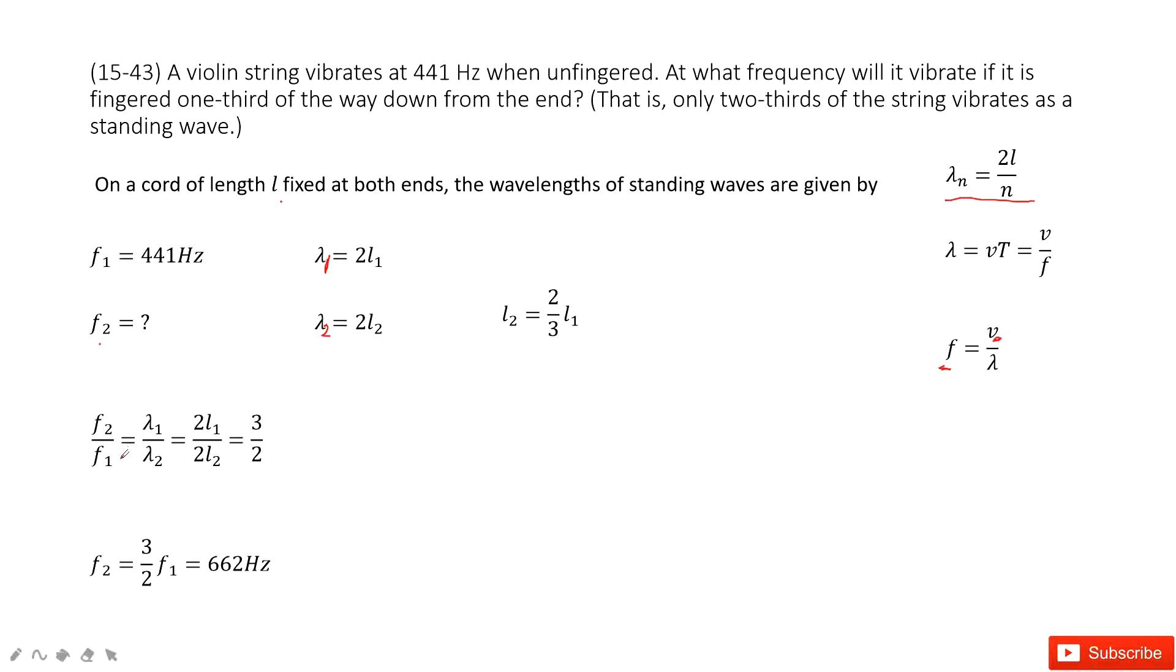f2 over f1 equal to lambda 1 over lambda 2. So from this equation, can we find this one? Because the V is constant.